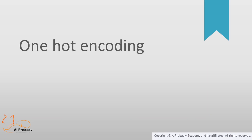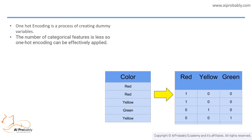Let's look into one-hot encoding first. One-hot encoding is a process by which categorical variables are converted into a form that can be provided to a machine learning algorithm for better prediction. The number of categorical features must be small enough for one-hot encoding to be effectively applied. For example, with colors red, yellow, and green: when the color is red, red=1, yellow=0, green=0; when yellow, red=0, yellow=1, green=0; and when green, red=0, yellow=0, green=1.